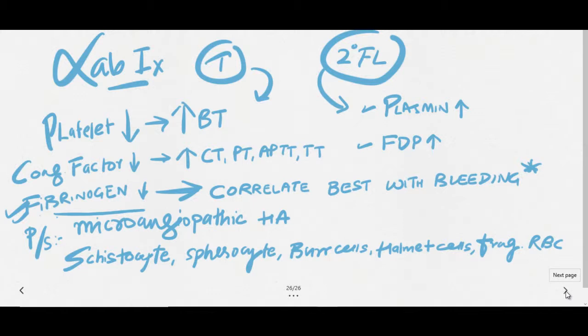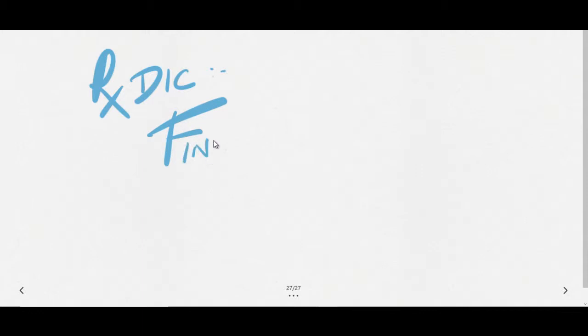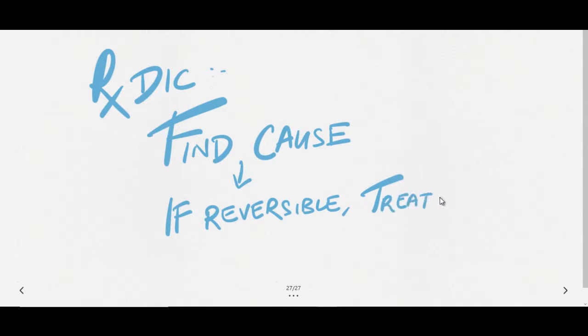Now, how to treat this condition? Treatment of DIC involves: find the cause and treat the cause. Because even if you treat it with some transfusion or replacement, unless and until you treat that cause, that replacement is useless. So find the cause, and if you find that cause is reversible, then treat the cause. That is the best treatment in case of DIC.